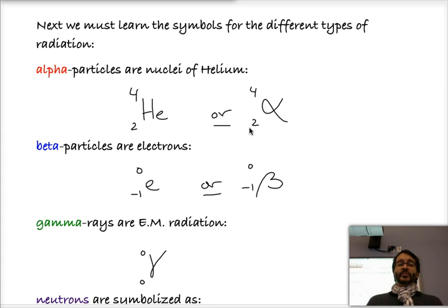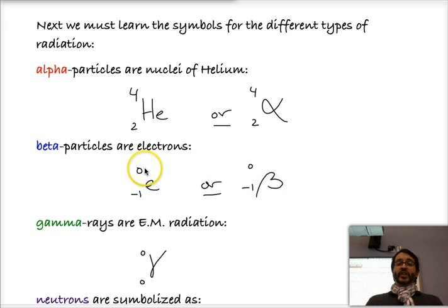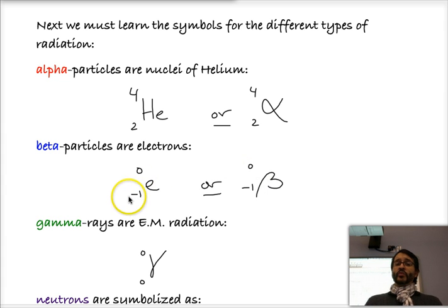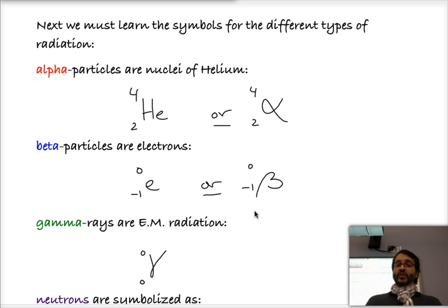Beta particles are electrons that are being emitted by the nucleus. We can use the symbol lowercase e or beta to represent a beta particle. On the top, since there are no protons or neutrons, we're going to put 0 — that would be the mass number. And on the bottom we're going to put this remarkable negative 1. We're putting negative 1 because if an electron were to come into the nucleus, it would cancel out a proton, and so we're going to use that as the expression.